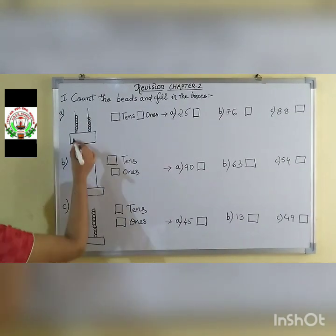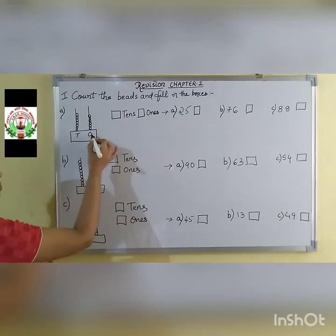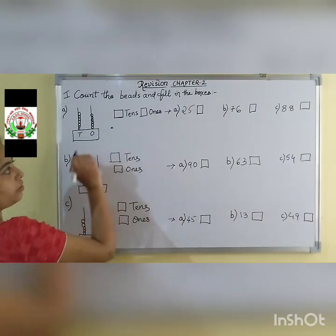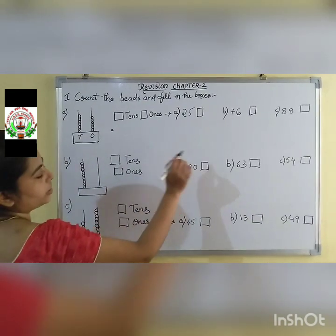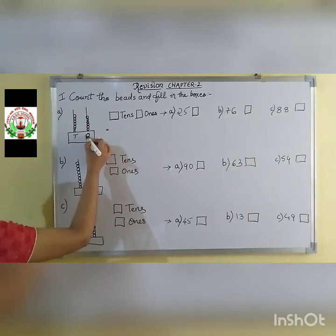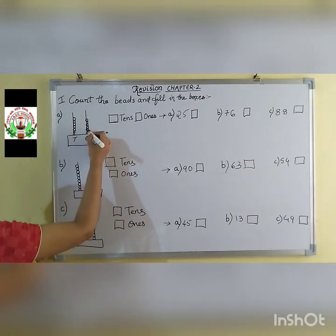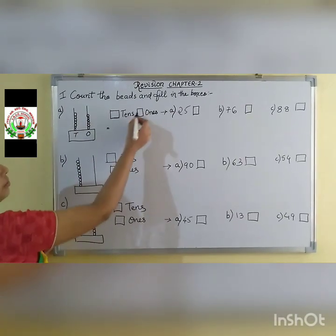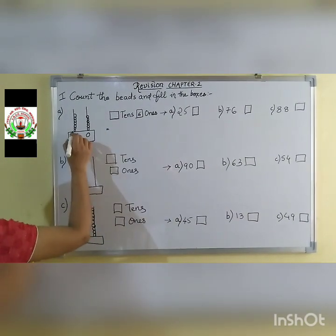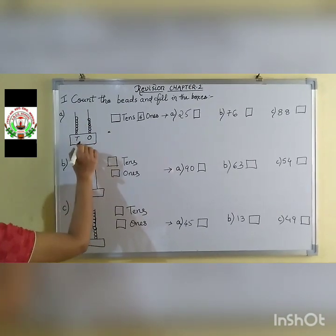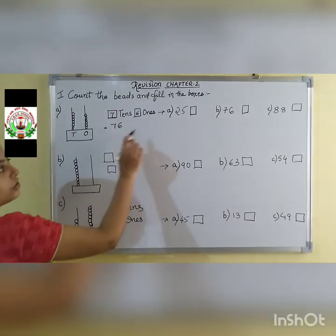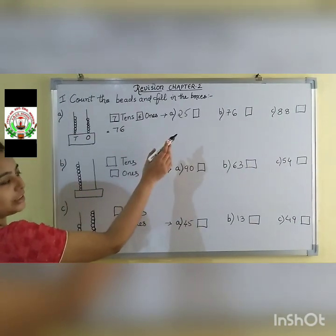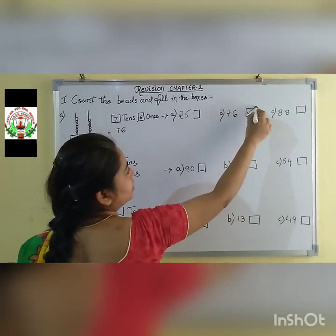Starting from the first question: 2 spikes are given — 1s and 10s. Count the bits in the 1s place: 1, 2, 3, 4, 5, 6. So the 1s place has 6. Then count the 10s place: 1, 2, 3, 4, 5, 6, 7. So we get the answer as 76. Which is the correct option? A is 25, B is 76, C is 88. The answer is B — 76. So we put the tick mark on B.